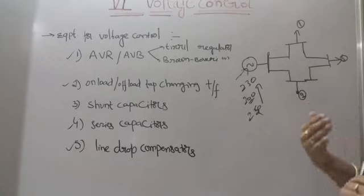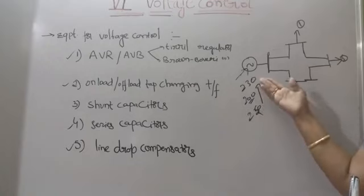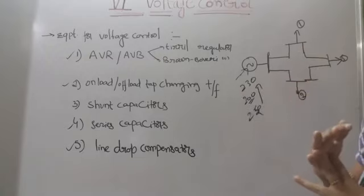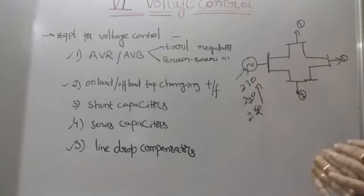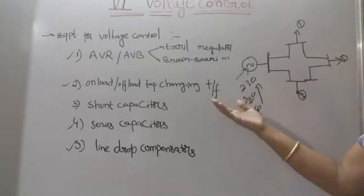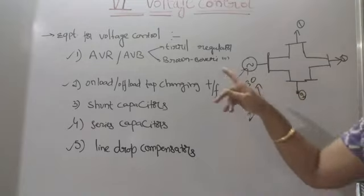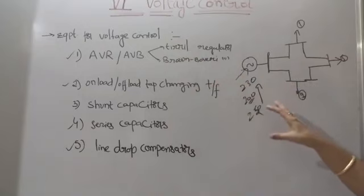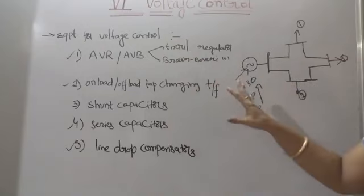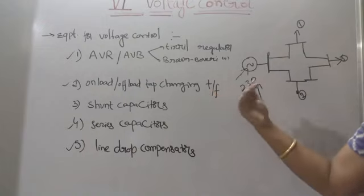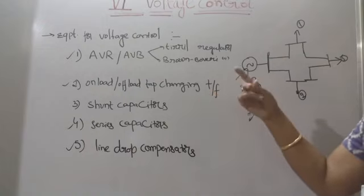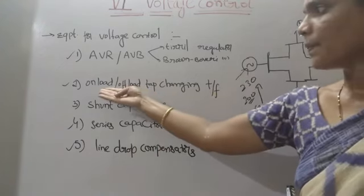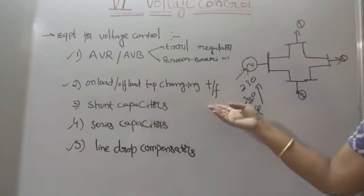The automatic voltage regulator maintains voltage up to the prescribed limit. This is the theoretical concept of AVR. I will explain the block diagram of AVR and AVB in next class. Here is the on-load and off-load tap changing transformer.